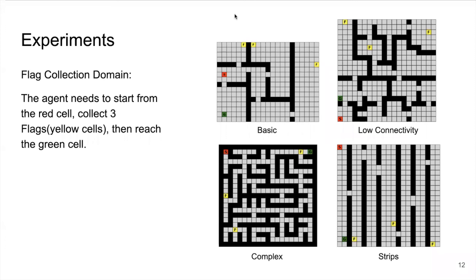For experiments, we worked on flag collection domain, which is an even more complex scenario. As you can see, these are four different mazes of flag collection domain. The agent is supposed to start from the red cell, collect three flags in yellow cells, and finally reach the green cell. Once the green cell is reached, the current episode will be terminated no matter how many flags are collected.